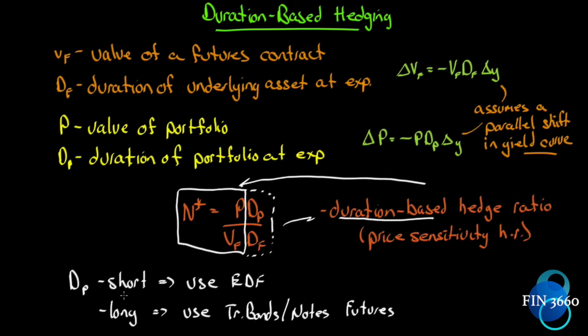This is also called a price sensitivity hedge ratio. If the duration of our portfolio is short, the underlying futures contract we will use will be the Eurodollar futures contract. If we have longer duration on our portfolio, we'll use either treasury bond futures or treasury note futures. We can find the length of time that we want based on the futures to match the duration of our portfolio. What we want to try to do is pick an underlying that has a duration very close to what we already have so that this ratio will be as close to one as we can get.